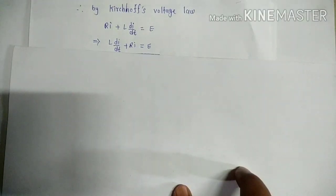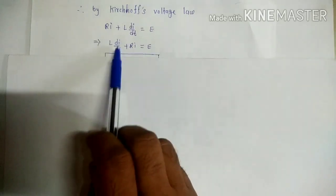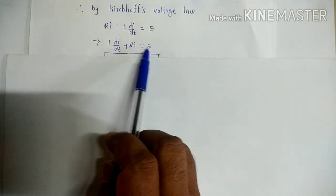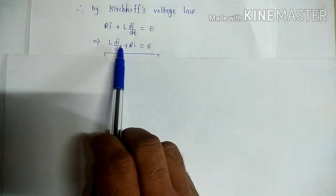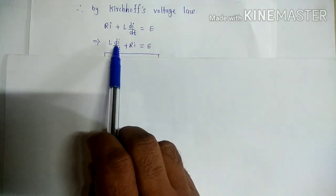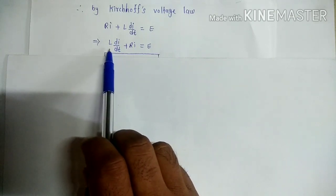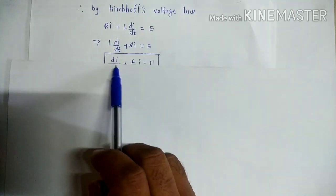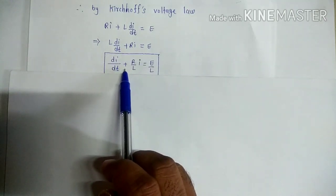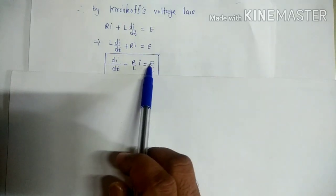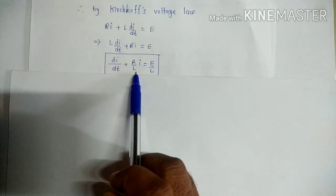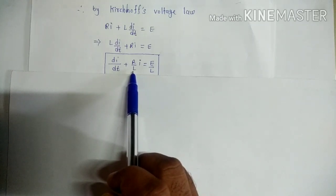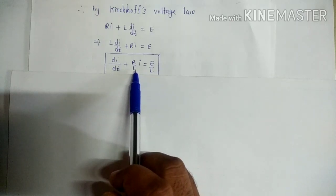We rewrite this equation as L di/dt + Ri = E. To write this differential equation in standard form, we make the coefficient of di/dt equal to 1 by dividing both sides by L. This gives di/dt + (R/L)I = E/L, which is the differential equation for an electrical circuit consisting of resistance R and inductance L connected in series with electromotive force E.